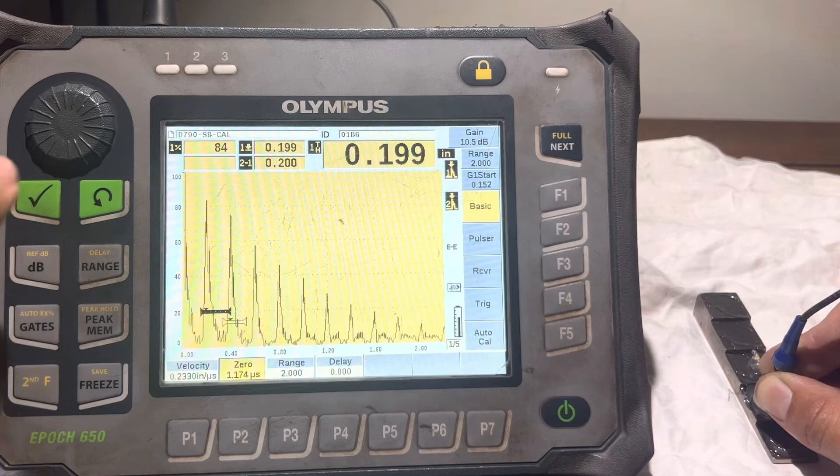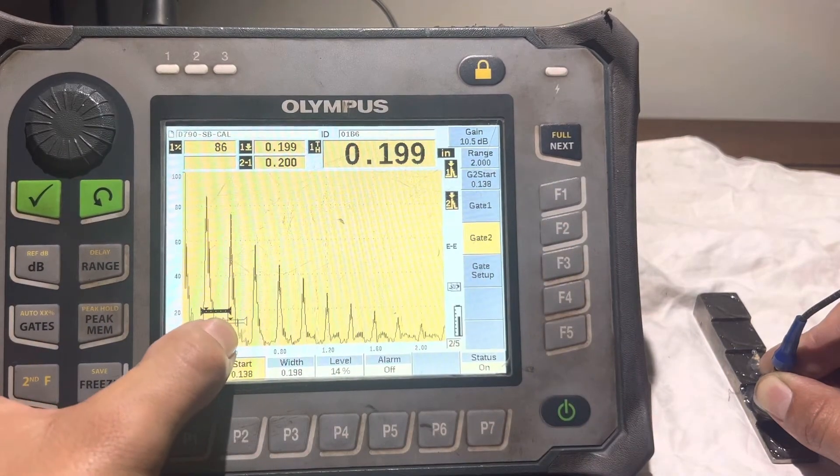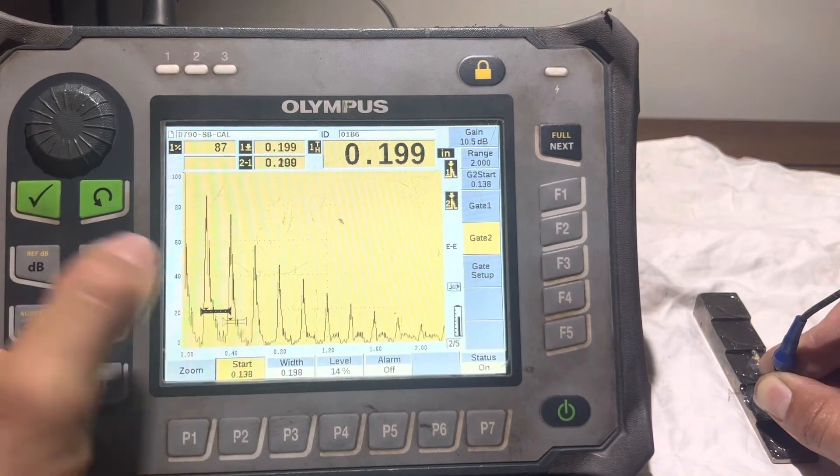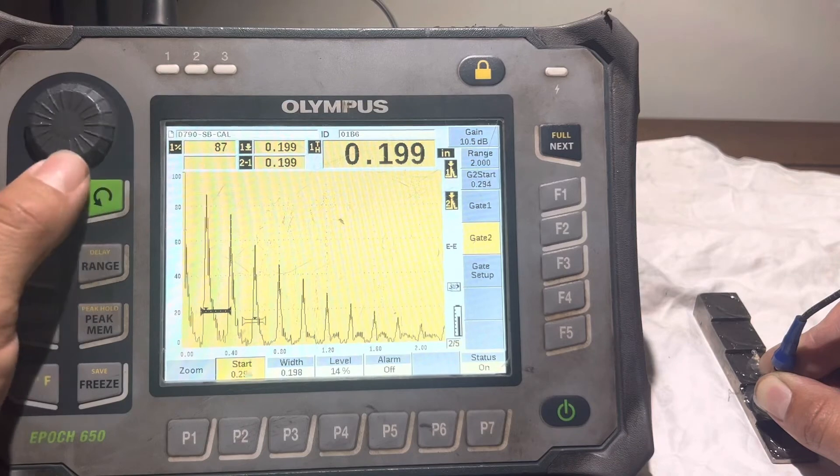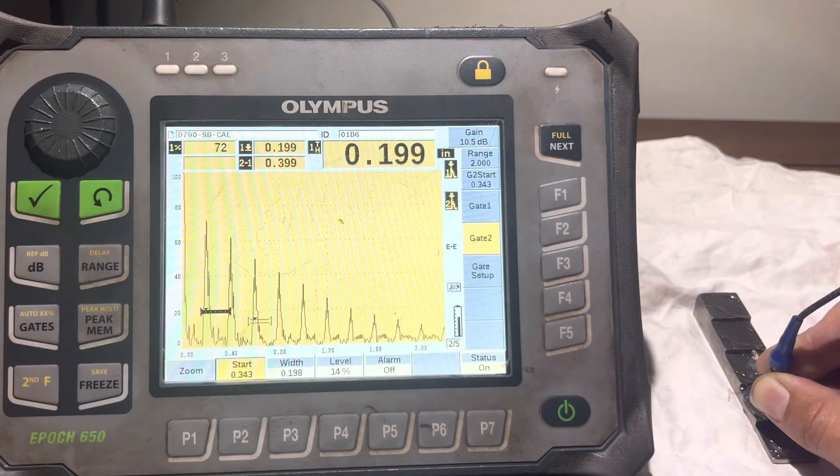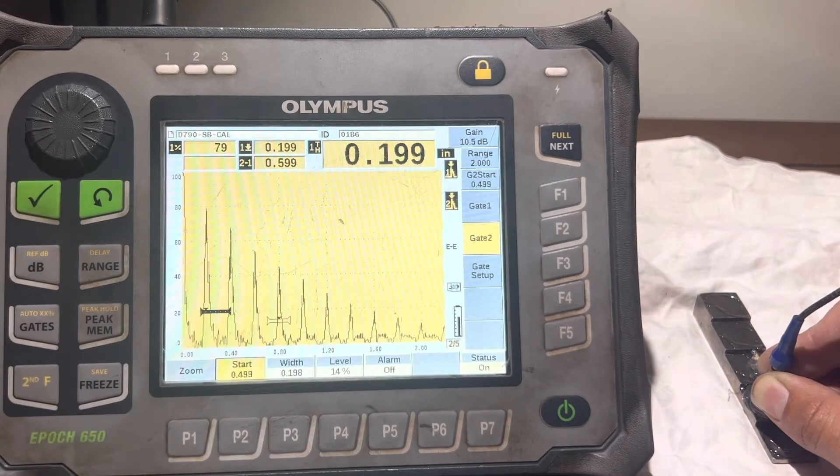If we move our second gate, it's reading this right here. It says 200 because that's the echo. So if we move it to here, it should double. It should say 4, which it kind of does, 0.399. If we move it over here, it should say 600.